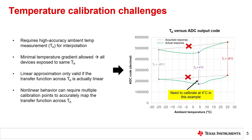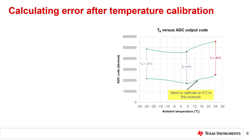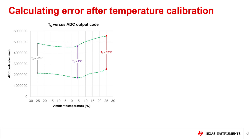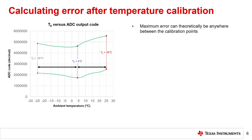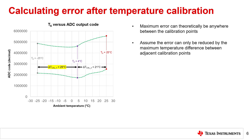Estimating the potential reduction in temperature error by calibration is explored in more detail on the next slide. This plot shows how multiple calibration points can be required for systems with non-linear behavior over temperature. The maximum drift error can theoretically occur anywhere between the calibration points because temperature error is not necessarily linear. Therefore, assume that error can only be reduced by the maximum ambient temperature difference between adjacent calibration points. Assuming this example system is calibrated at negative 25, 4, and 25 degrees Celsius, the maximum ambient temperature difference is delta T cal 1, or 29 degrees Celsius.